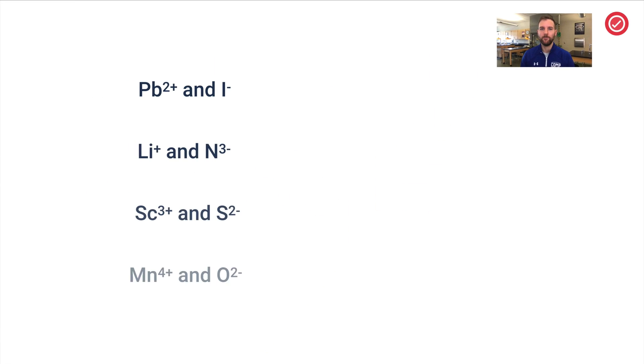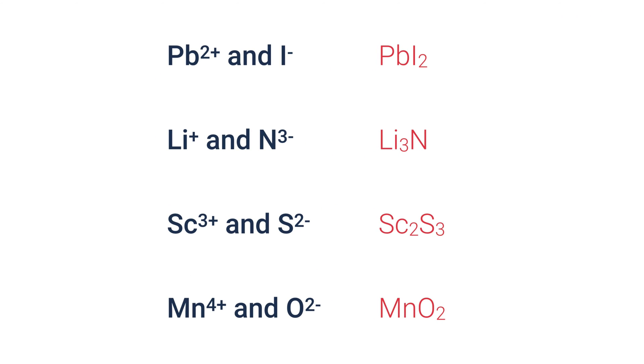Here are four more examples. Pause the video now, try putting together the correct ionic formula for these ions and the answers will pop up. Here they are: PbI2, Li3N, Sc2S3, and look at this last one. Maybe if you did the crisscross method you would have gotten MnO4. We don't want MnO4 as the formula because that two and four can be reduced, so MnO2 is the correct formula.